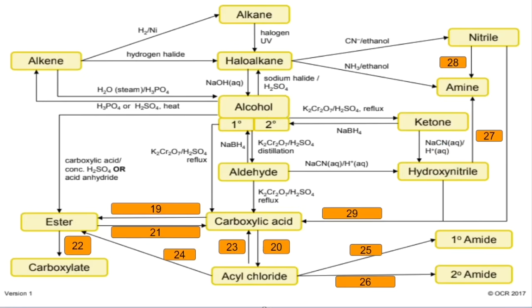Number eighteen: ketone to hydroxynitrile — sodium cyanide and aqueous acid. Number nineteen: carboxylic acid to ester — react it with an alcohol in the presence of a concentrated sulfuric acid catalyst and you would heat that. Number twenty: carboxylic acid to acyl chloride — you react it with thionyl chloride, SOCl2. Number twenty-one: ester to carboxylic acid — that's a hydrolysis reaction; use dilute acid and heat it.